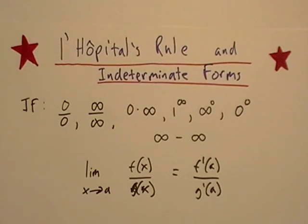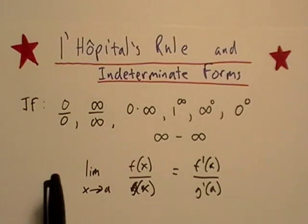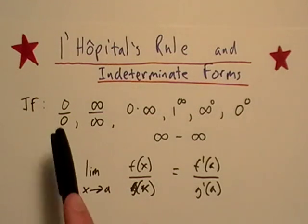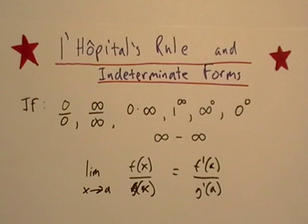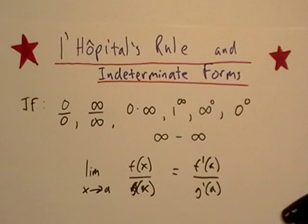Basically you'll arrive at a situation one day when you're taking the limit of a function and you're going to end up with something like this. You're going to end up with like a zero over zero. So one of these situations right here, you're going to find yourself entrapped in one of these things and L'Hôpital's Rule is basically a way around it.